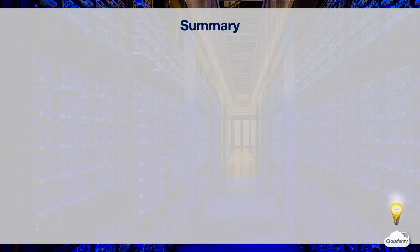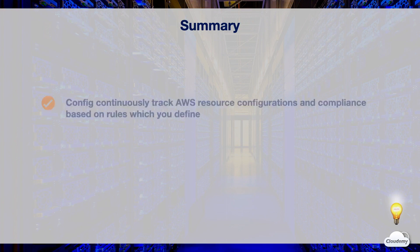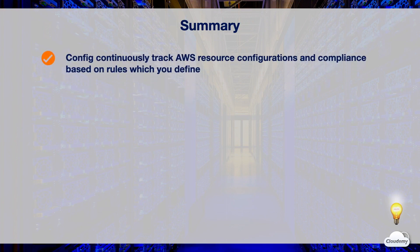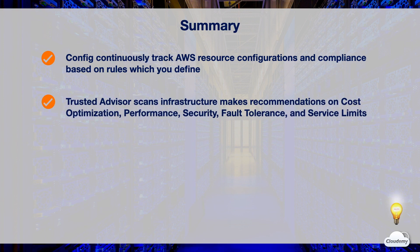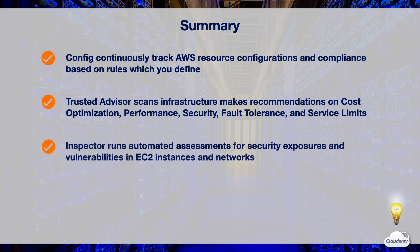In this episode, we've learned AWS Config, Trusted Advisor, and Amazon Inspector. AWS Config continuously tracks AWS resource configurations and compliance, based on rules which you define. AWS Trusted Advisor scans AWS infrastructure and makes recommendations on cost optimization, performance, security, fault tolerance, and service limits based on AWS best practices. Amazon Inspector runs automated assessments for security exposures and vulnerabilities on EC2 instances and networks.